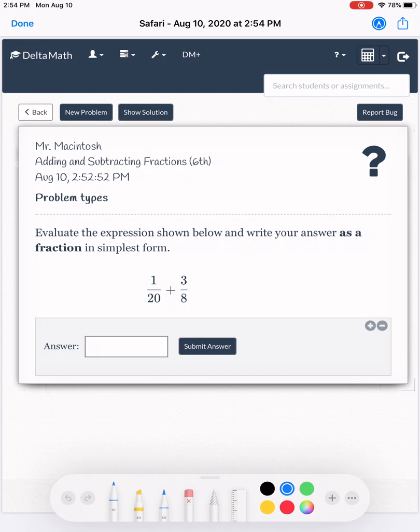I'm going to use the highlighter, so I'm going to click on highlighter. Yellow is a good color for that. So it says to evaluate the expression, so I'm just going to go ahead and highlight that. As a fraction in simplest form, so I'm going to highlight that.